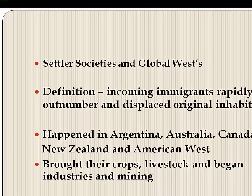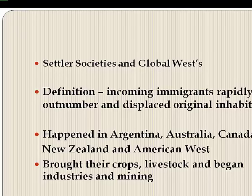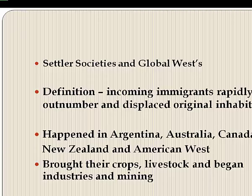The conquest of the West was part of a worldwide movement. People moved into the interiors of different regions across the globe — Argentina, Australia, Canada, New Zealand, and the United States — bringing their crops and livestock and starting businesses in mining and farming. These are called settler societies, because immigrants from overseas rapidly outnumbered and displaced the original inhabitants.